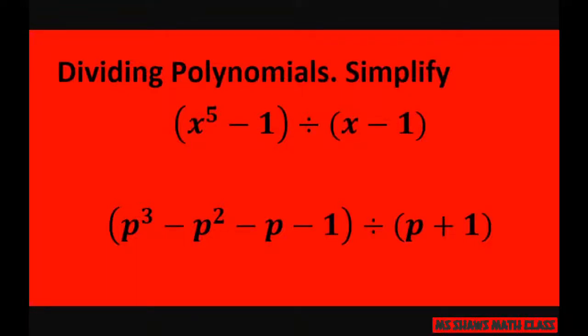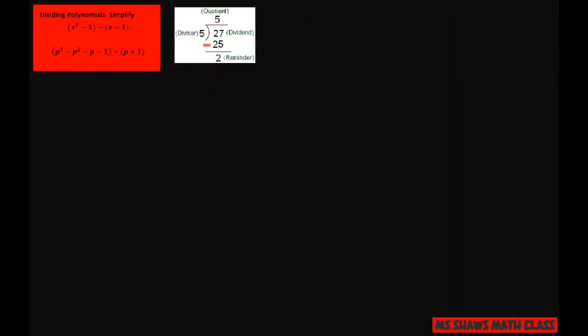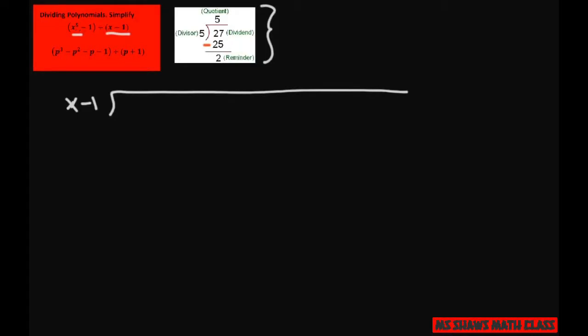Hi everyone, we're going to divide polynomials and simplify them. These are the two examples we have. For the first one, I'm using long division. I'm going to write my divisor, which is x minus 1, and I'm dividing x to the fifth minus 1.